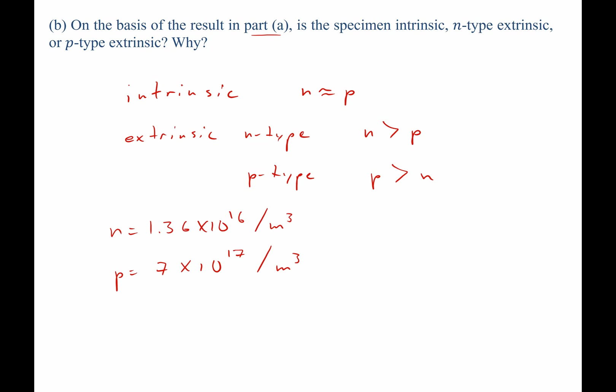So in this case, there's actually many more holes than there are electrons, therefore we can say p is greater than n, it must be a p-type extrinsic.